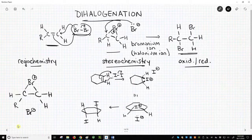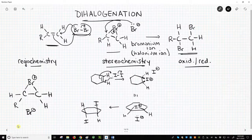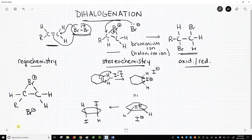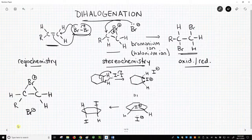Let's talk about regiochemistry. You might say that because we're adding Br to both sides of the alkene that there is no regiochemistry. You're right, but there is something to think about. When bromide, Br-, attacks the bromonium ion, it attacks the more highly substituted carbon of the ring.